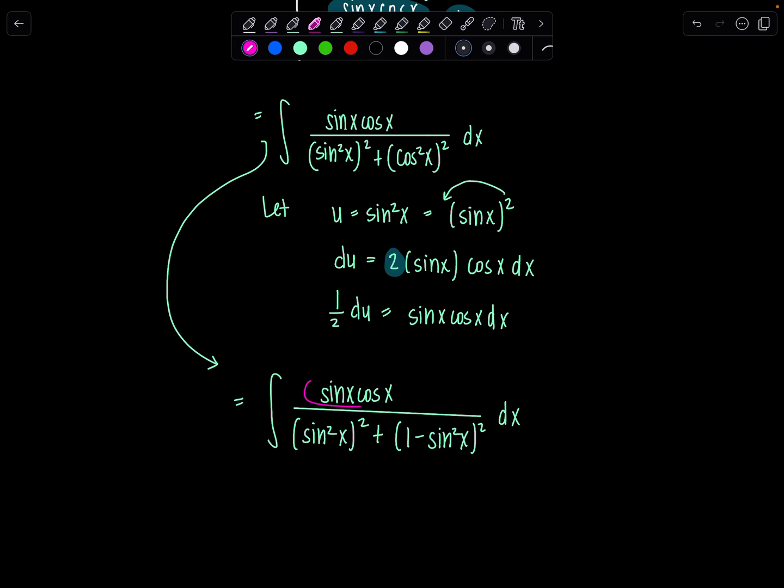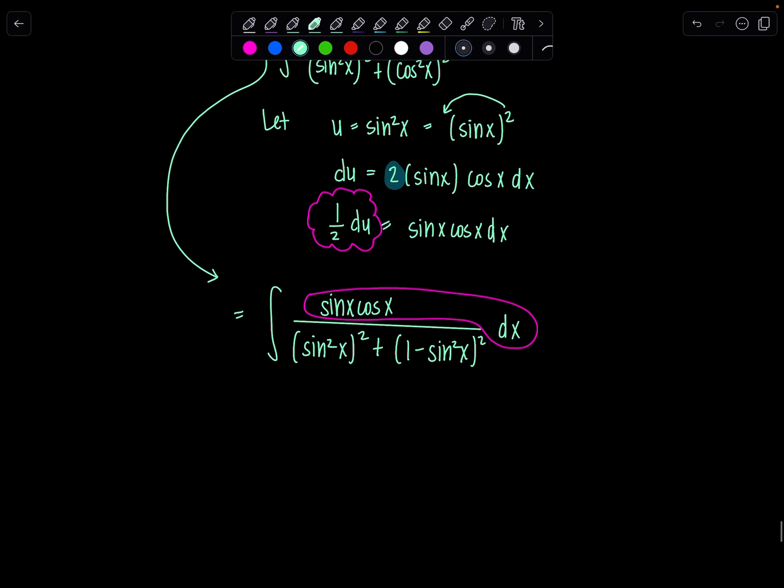So then all of this here, sine x cosine x dx, that's going to get replaced with 1 half du. Let's put the 1 half outside for now. du is in the numerator. Who's next? Sine squared x squared. So u is sine squared x. This is just going to be u squared. Plus, and then this term here is 1 minus u quantity squared.